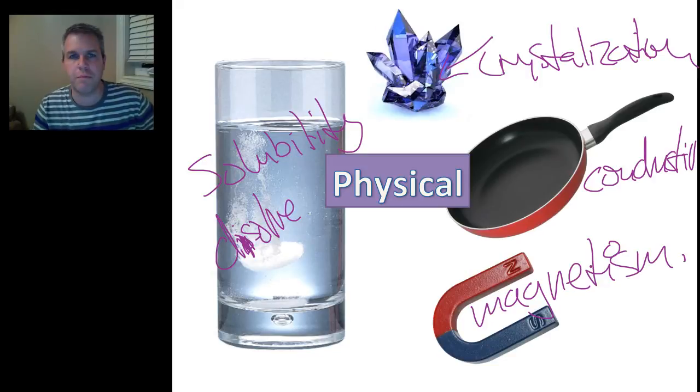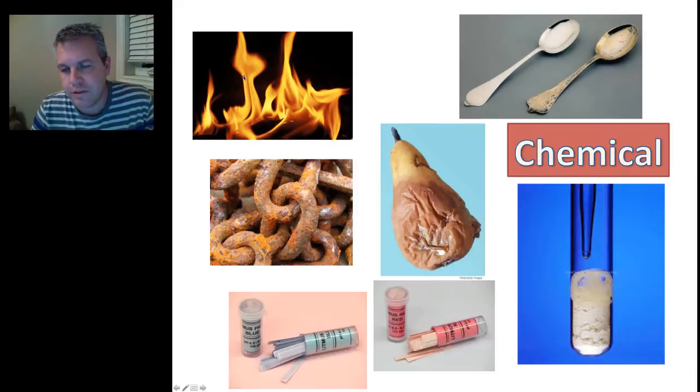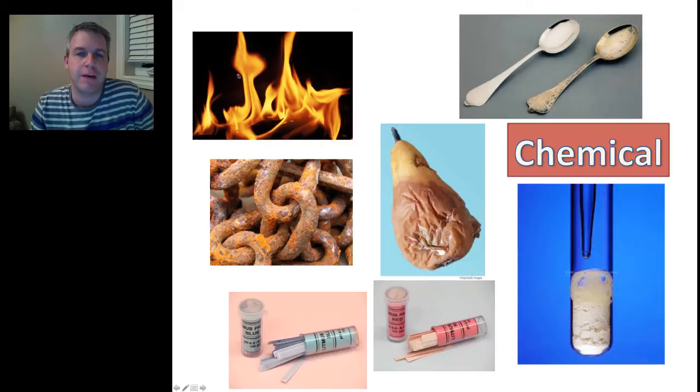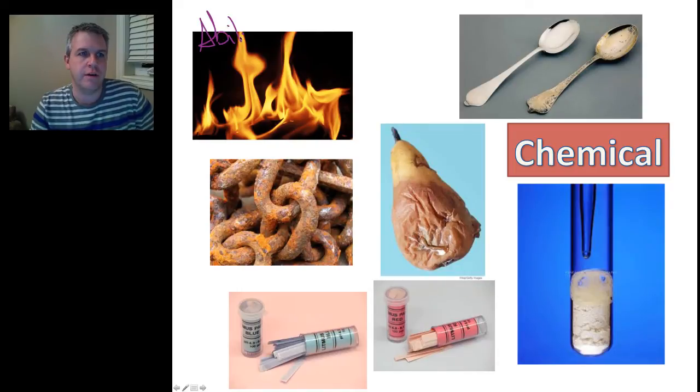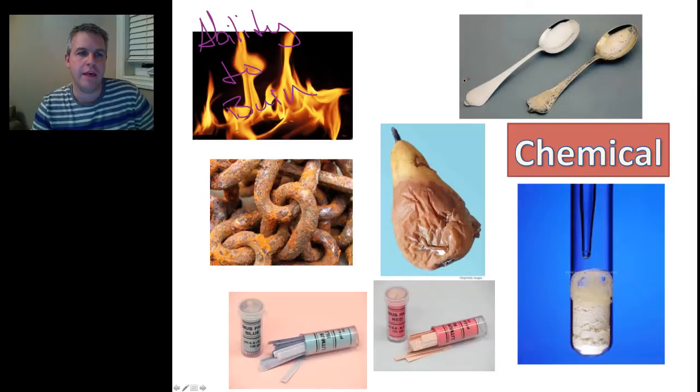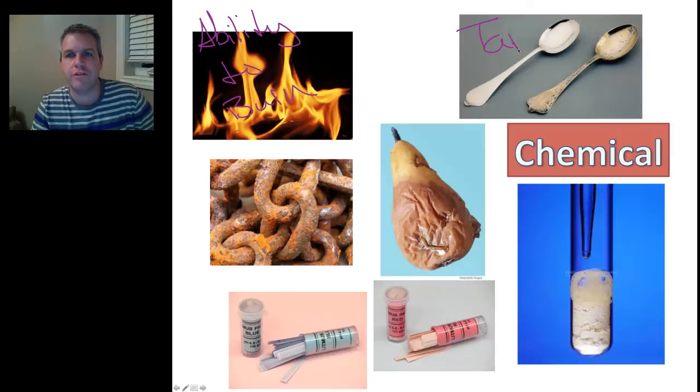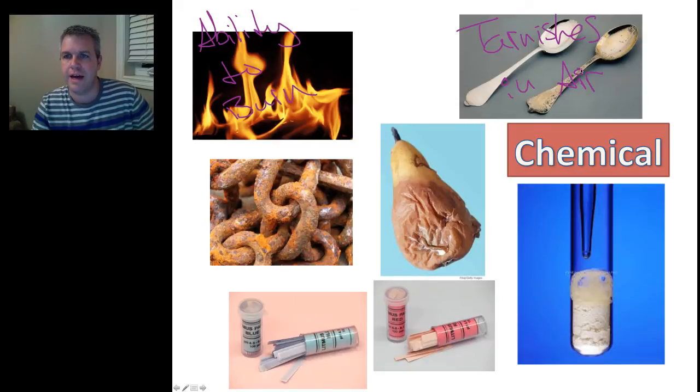And again, the actual chemical makeup of the material isn't changed at all, so this brings us to our chemical properties. And basically, what is a chemical property? It is when we actually change the matter of something or the material which it's made up with. So, over here, we have the ability to burn. Can it burn? Over here, we're going to look at whether it tarnishes in air. Does it actually tarnish?